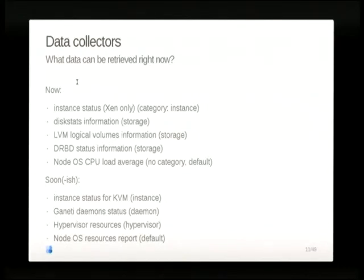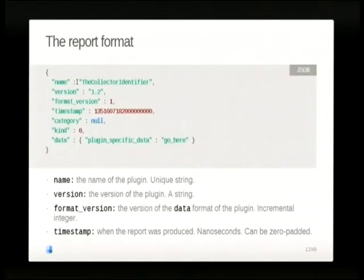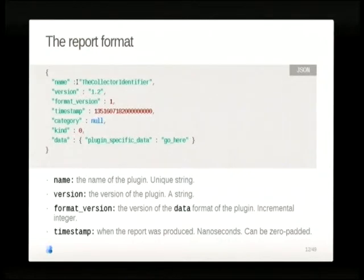There is information about the storage, the backend for the storage — the general disk and the backend of the disk. DRBD: in case you're using DRBD, is it in sync, is it out of sync? And the load average for the CPU. You can easily write more data collectors in Haskell, or there was supposed to be a small plugin interface. This is the report format — you can go back to the slides on the Ganeti webpage and see what the various fields mean. You can write your software to integrate with it and say what's good, what's bad, and when you need to be woken up at night to fix your cluster.